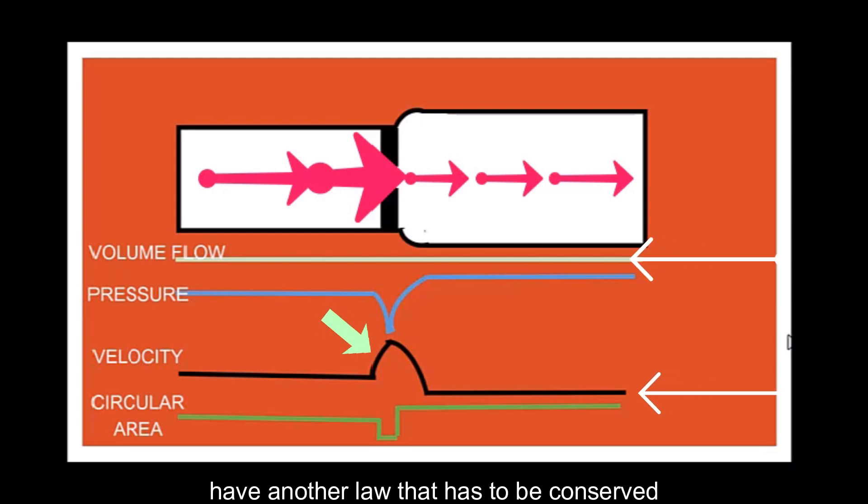But now we have another law that has to be conserved, conservation of energy law. If the kinetic energy increases to conserve the mass, it means an increase of velocity in this region. Then, it is necessary that another form of energy decrease, and the energy that decreases here is the pressure. Notice that the peak of the pressure drop is at the peak of velocity flow. The total energy is conserved. Hence, the flow rate, that means the velocity, multiplied by the area, remains the same. The mass is conserved.